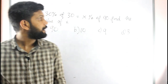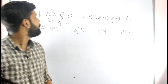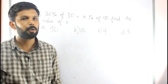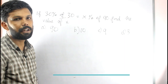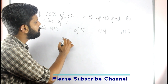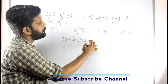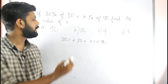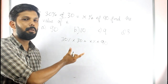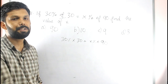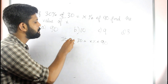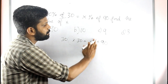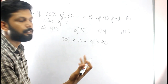The first question is: if 30% of 30 is equal to x% of 90, then find the value of x. We write the statement as 30% into 30 is equal to x% into 90. We are going to cross out the percentage signs on both sides. So the equation becomes simplified. Now we are going to cross out other common factors.